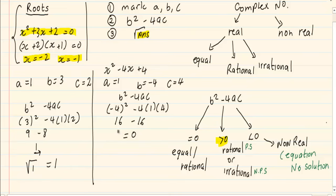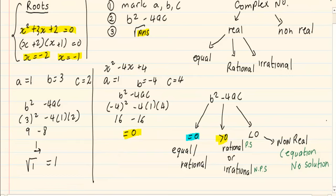Now, look at our answer. If we root 0, we are going to get 0. 0 falls into this category where it is equal to 0. How do we describe the nature of these roots? Number 1, it is equal. And number 2, it is rational.